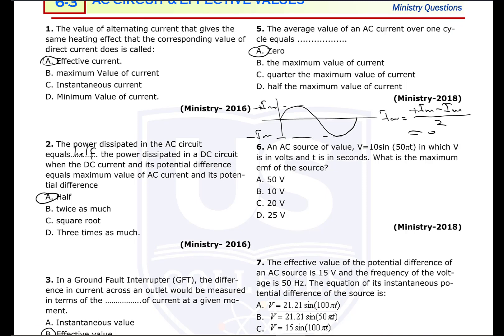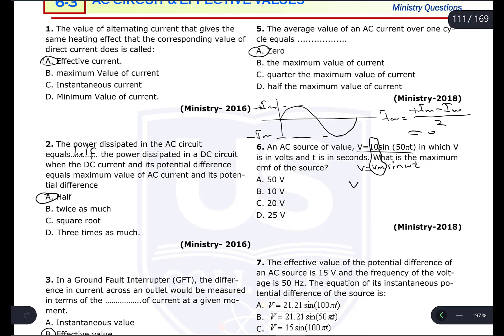An AC source has the equation V = 10 sin(50πt), where V is in volts and t is in seconds. What is the maximum EMF? Comparing with the generator equation V = Vm · sin(ωt), the value written in place of Vm is 10, so the maximum potential difference of the source is 10 volts. The answer is B.